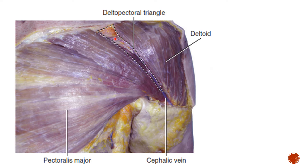Now, the contents of the deltopectoral triangle — you need to remember two contents. One is the cephalic vein, and the other is the deltoid branch of the thoracoacromial artery. The thoracoacromial artery is a branch of the second part of the axillary artery and gives four branches; among those, the deltoid branch runs in this deltopectoral groove.